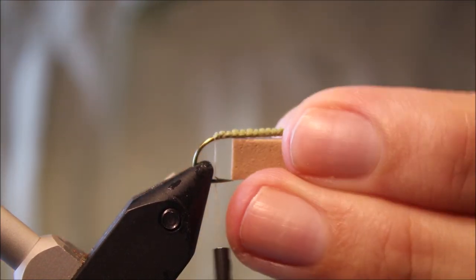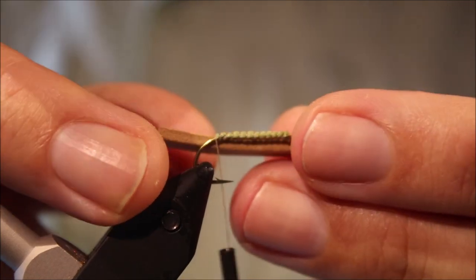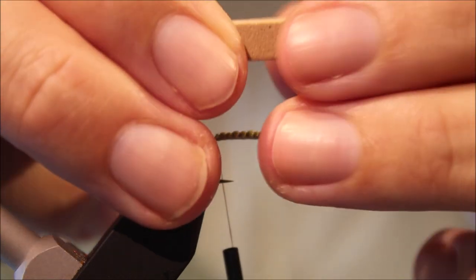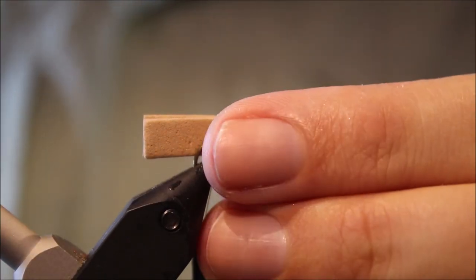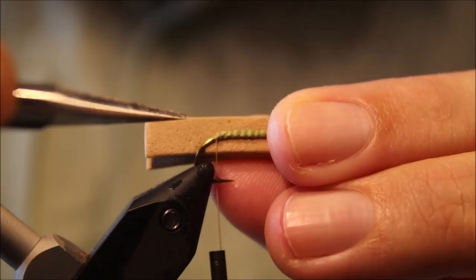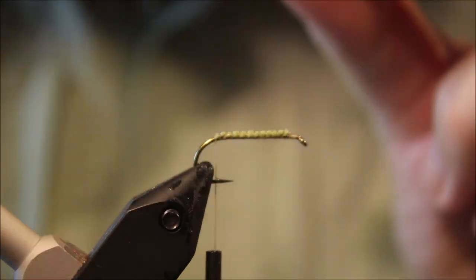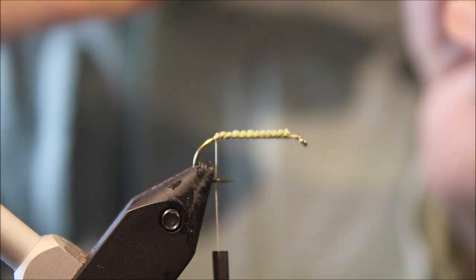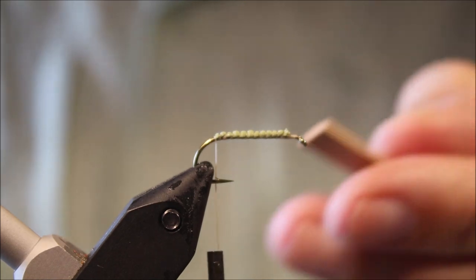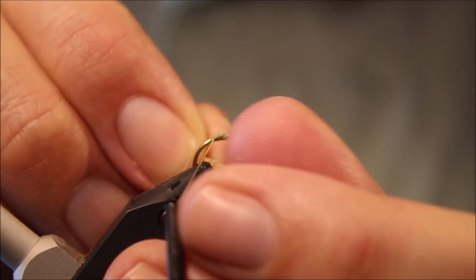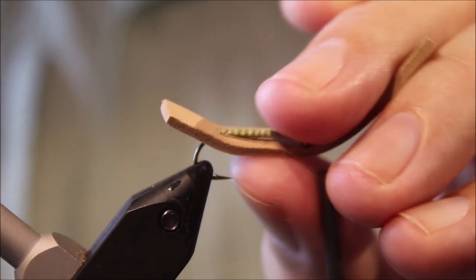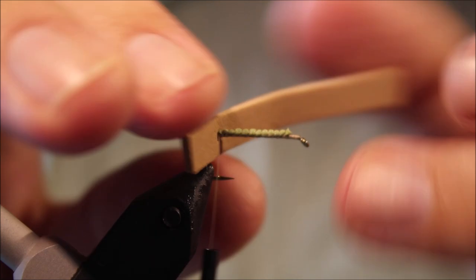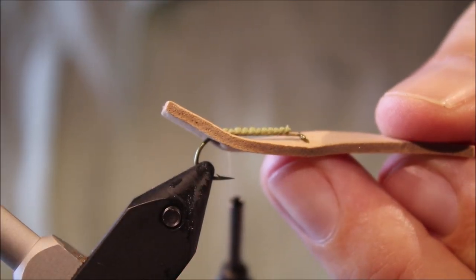I'm going to take a strip of two mil foam that's like the width of the gap. I fold it in half. I pre-cut it because I know the length I need anyway, and then I measure it against the hook. I'm showing you on your side and I'll put a hole where I want it coming through.